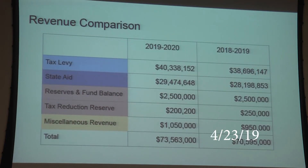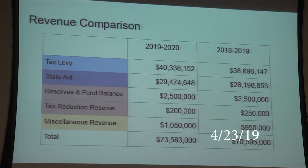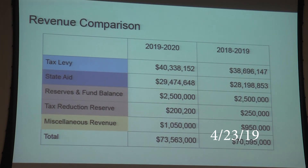To summarize in a color-coded way: the tax levy is the highest amount, then state aid, then reserves and fund balance. The tax reduction reserve — that's the million dollars received from the sale of Old Beacon High School — this will be the last year we can use that. PILOTs fall in the miscellaneous revenue section, totaling about $1,050,000.